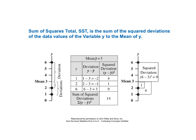The sum of squares total, SST, is the sum of the squared deviations of the data values of variable Y to the mean of Y. Our three data points had Y values of 1, 2, and 6. 1 plus 2 plus 6 equals 9, divided by 3, gives a mean value of 3 for the Y variable. The deviations from this mean are negative 2, negative 1, and 3. The squared deviations are 4, 1, and 9. The sum of the squared deviations is 4 plus 1 plus 9 equals 14 — this is SST, the sum of squares total.